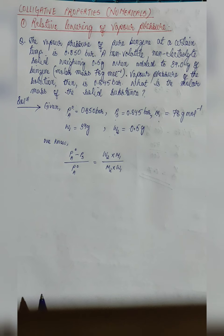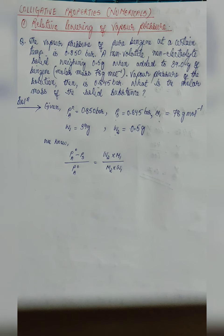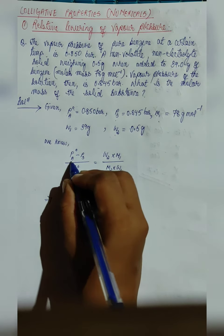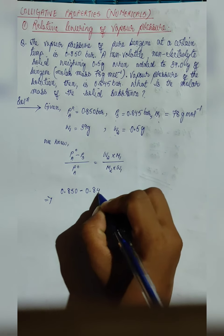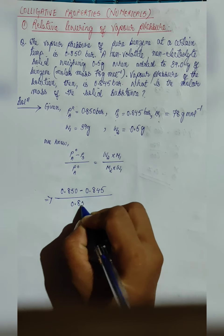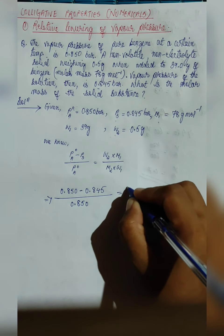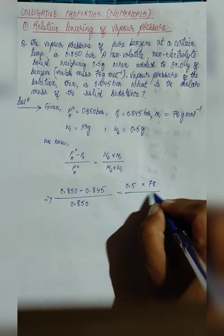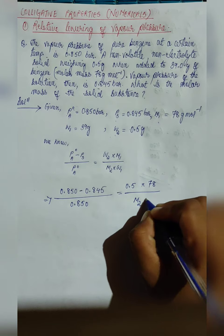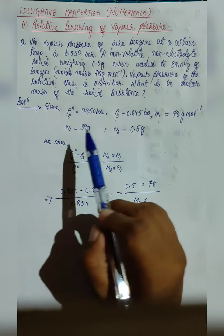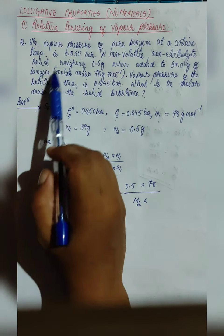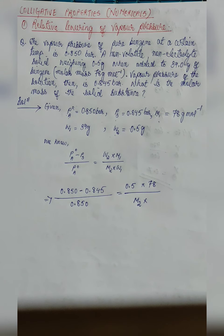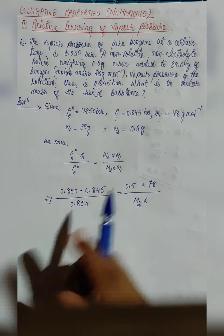We will simply put all the values given for all the parameters. P_A naught is 0.850 minus P_S, divided by P_A naught 0.850, equals W2 which is 0.5, into M1 which is 78, divided by M2 — the molecular mass of the solid substance is not known, that is what we are finding — into W1 which is 39.